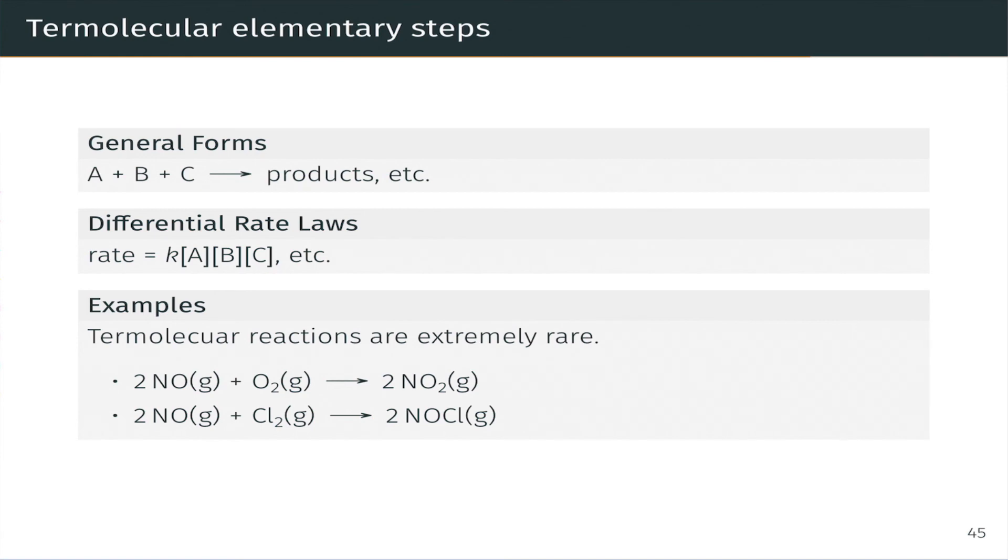But examples might be, for instance, two NO molecules reacting with one O2 molecule. The overall molecularity is three, three molecules total, and it's bimolecular in NO and unimolecular in O2. Try writing the rate laws for these example reactions on your own, these example elementary steps on your own using the stoichiometry of the step.